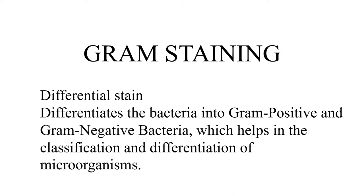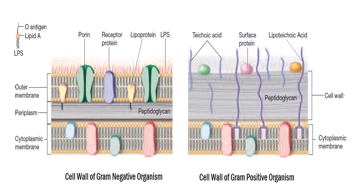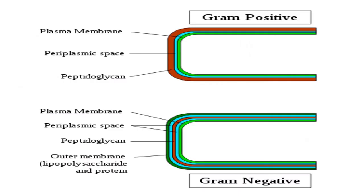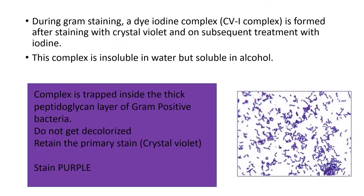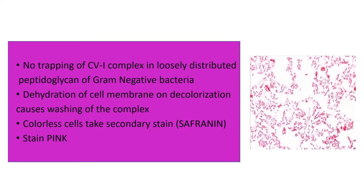The gram stain is a differential stain used to differentiate between gram positive and gram negative bacteria. The principle of gram staining is based on the difference in the structure of the cell wall. Gram positive bacteria have a thicker peptidoglycan layer compared to gram negative bacteria. The diiodine complex formed after staining is trapped inside this thick layer of gram positive bacteria; they do not get decolorized and retain the primary stain, hence stain purple. Due to the thin peptidoglycan layer, trapping of the diiodine complex does not occur in gram negative bacteria, which take up the secondary stain and stain pink.